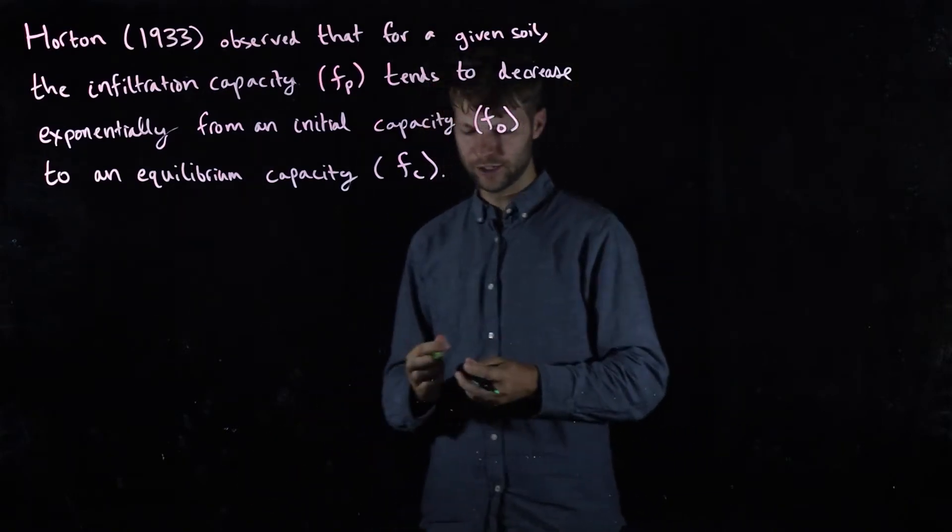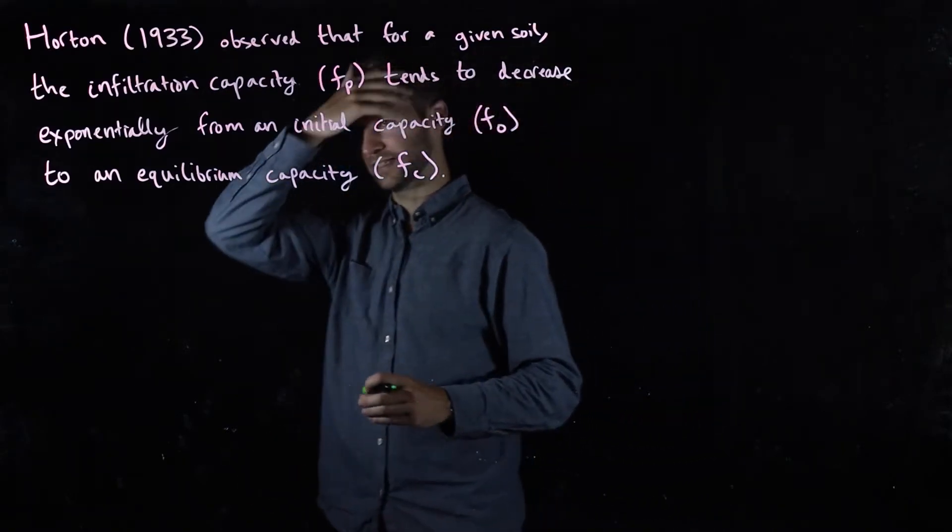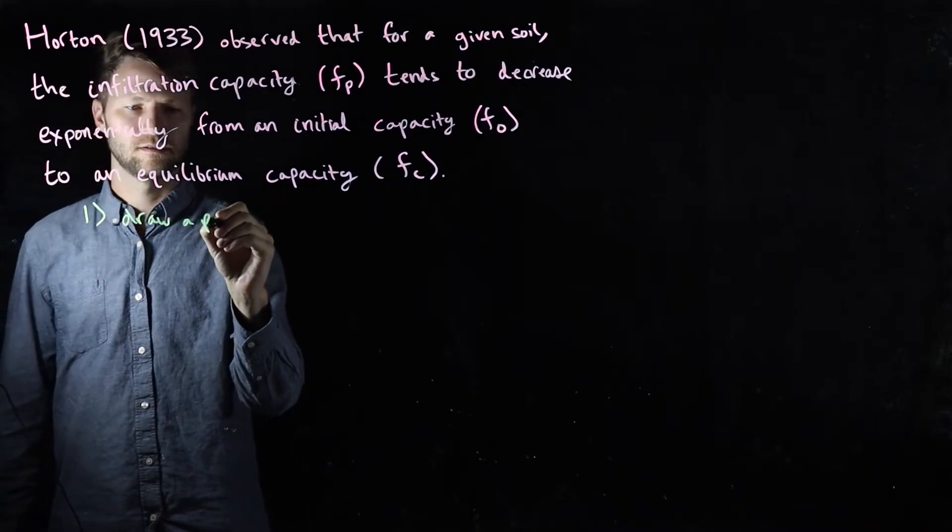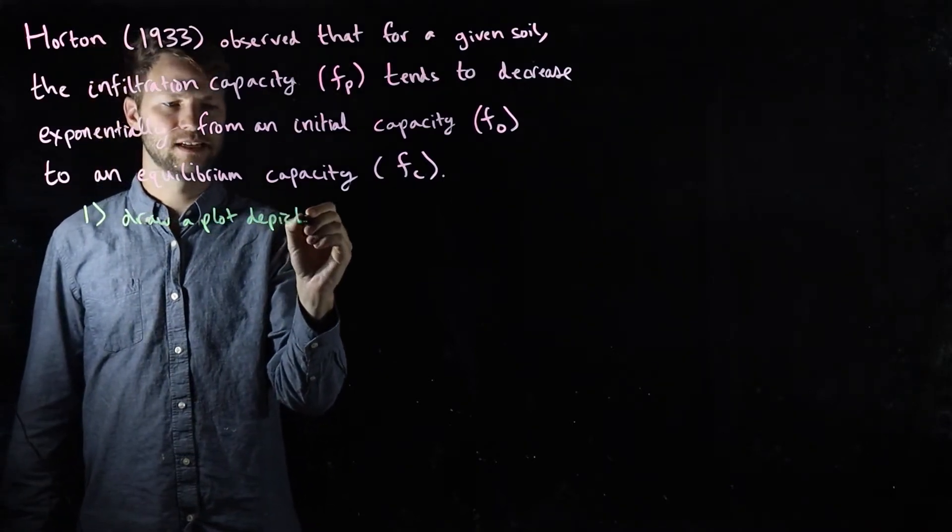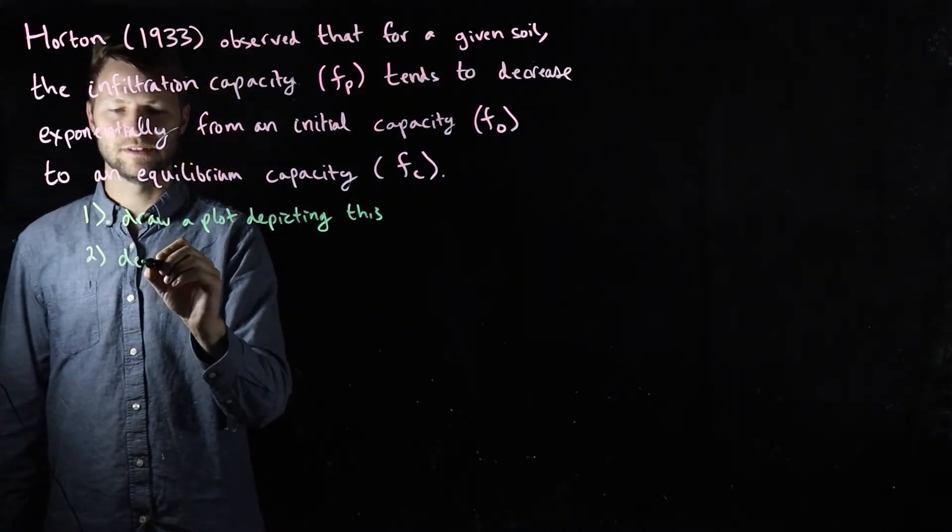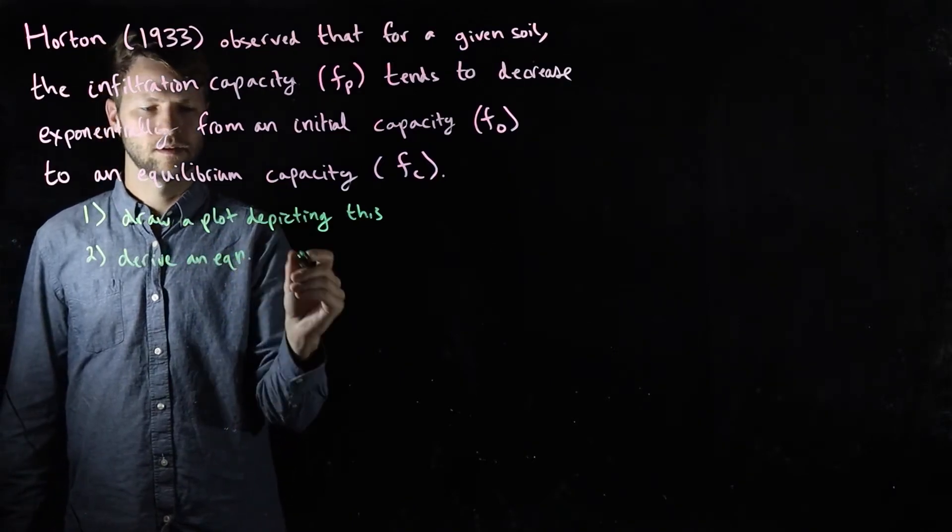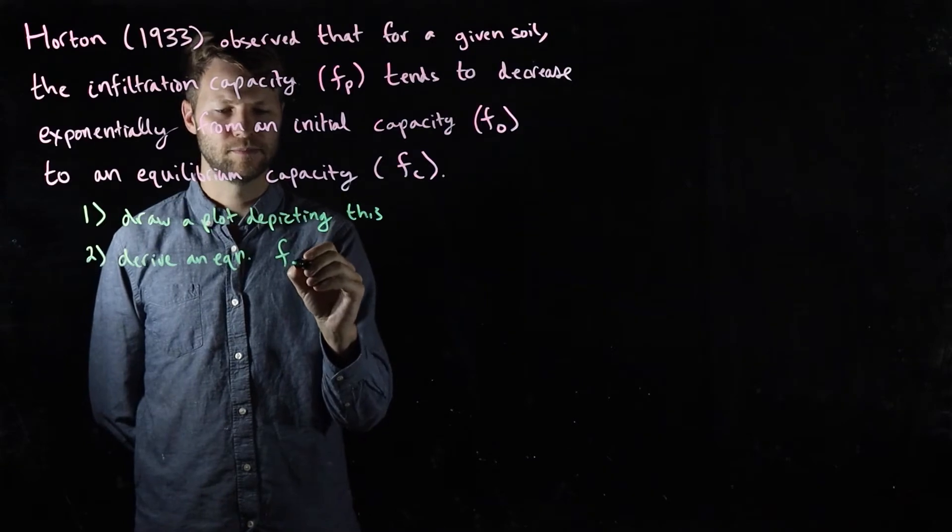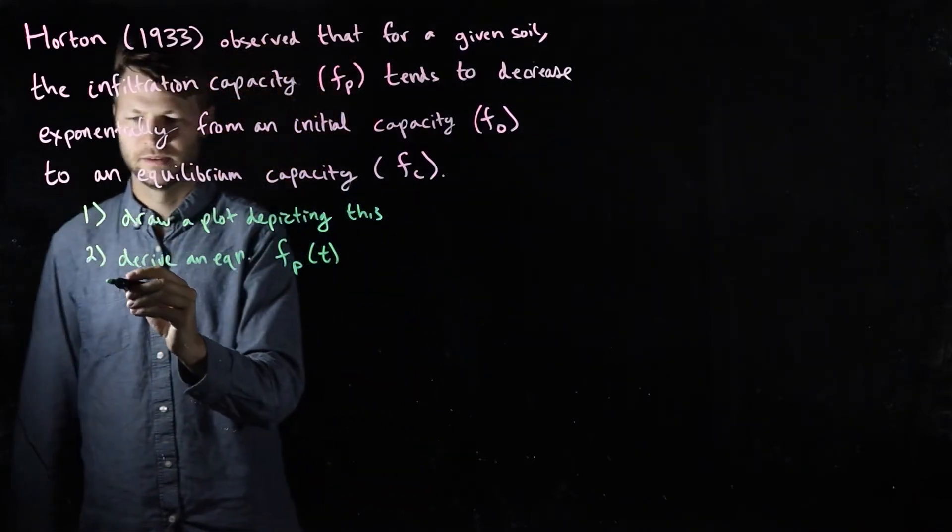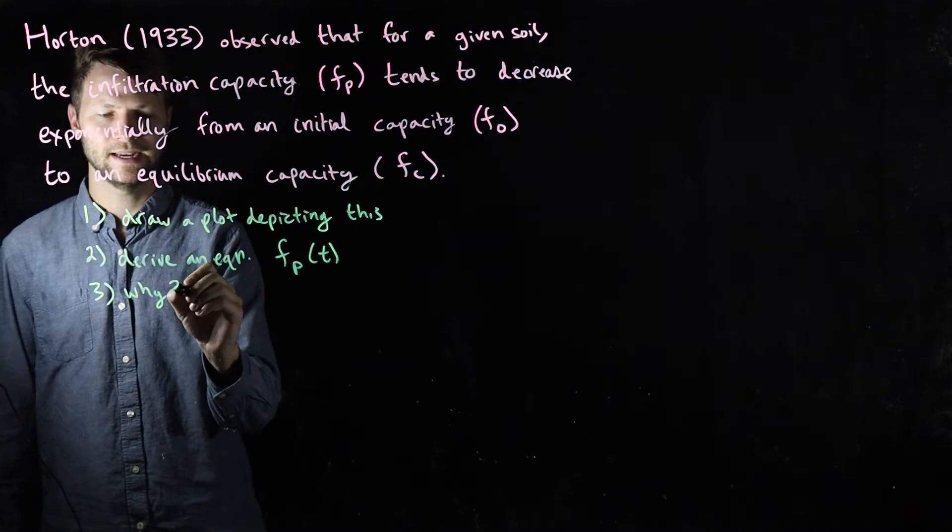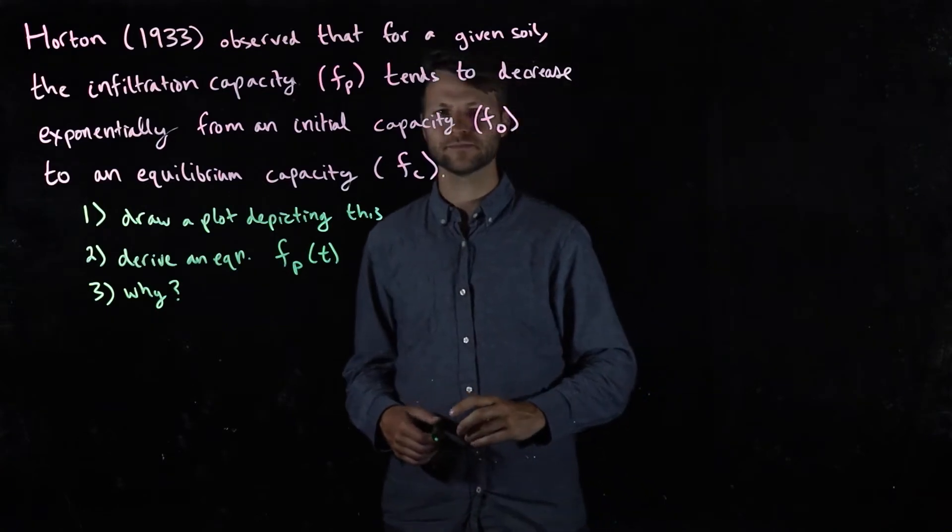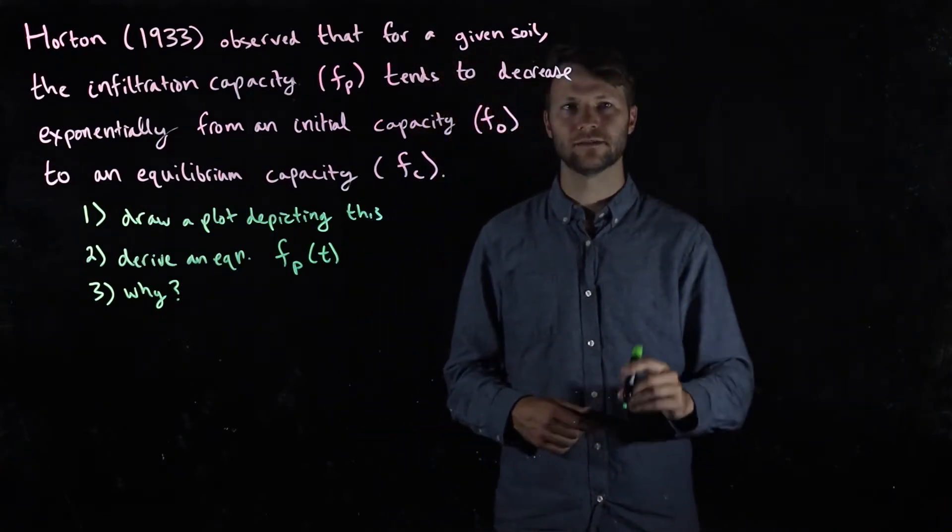If you're watching at home, I'm going to give you a few tasks and ask you to pause the video and do these on your own. One, I want you to draw a plot depicting what is said in words here. Two, I want you to derive a simple equation in which f_p as a function of time is plotted against time. And three, I want you to think of some mechanisms or processes that might explain why this behavior actually happens. Pause the video and work on these, and when you're ready we'll come back.